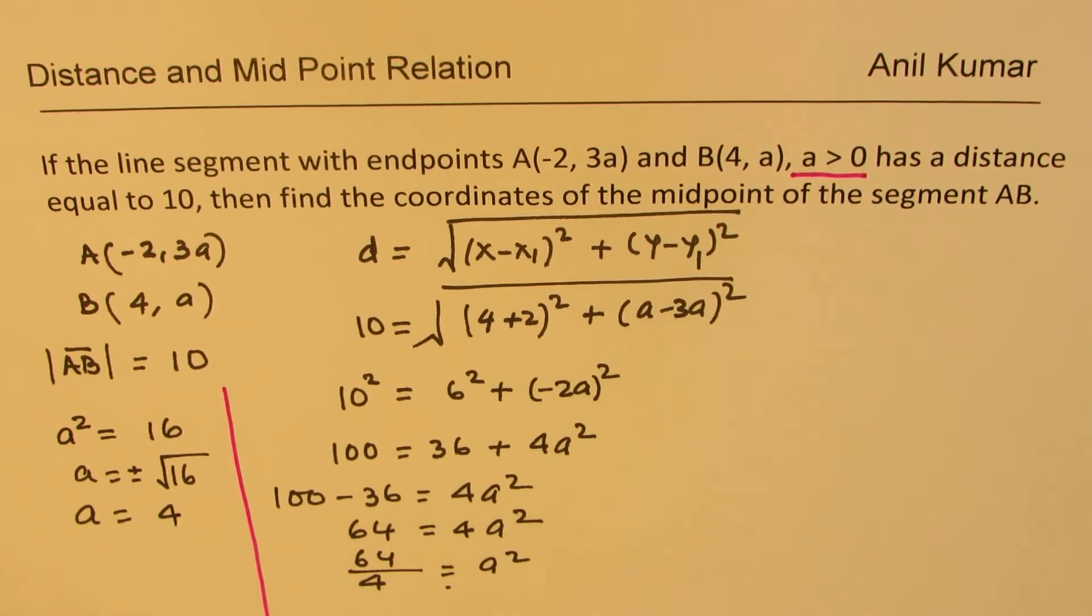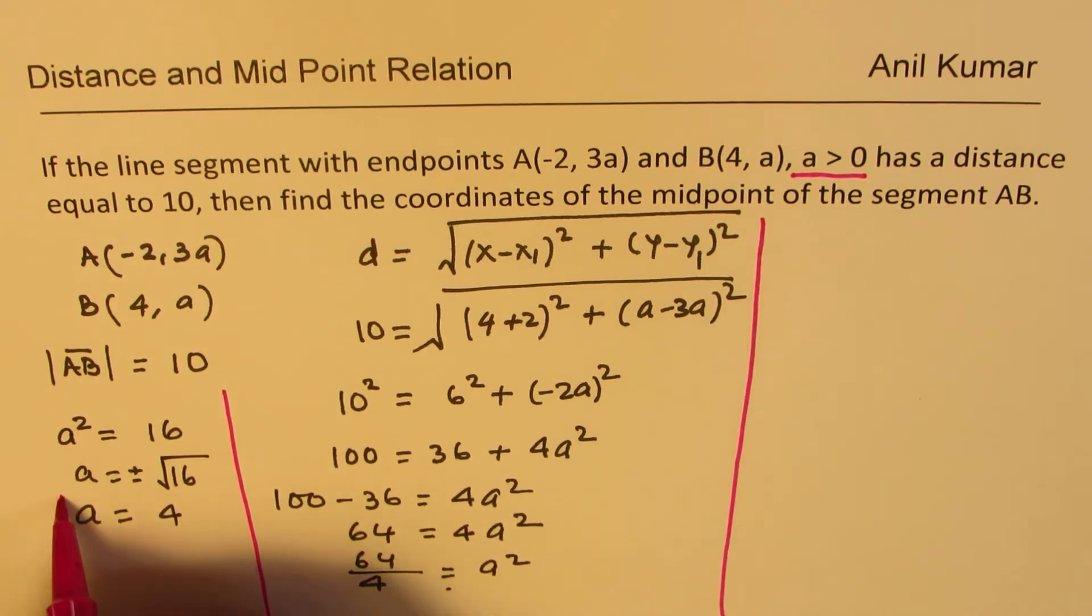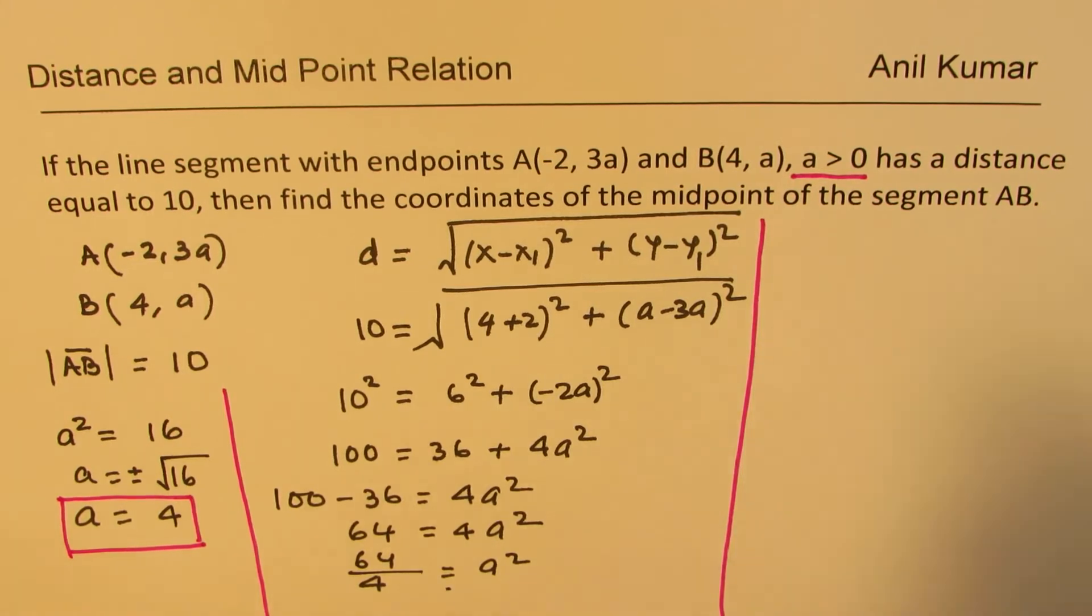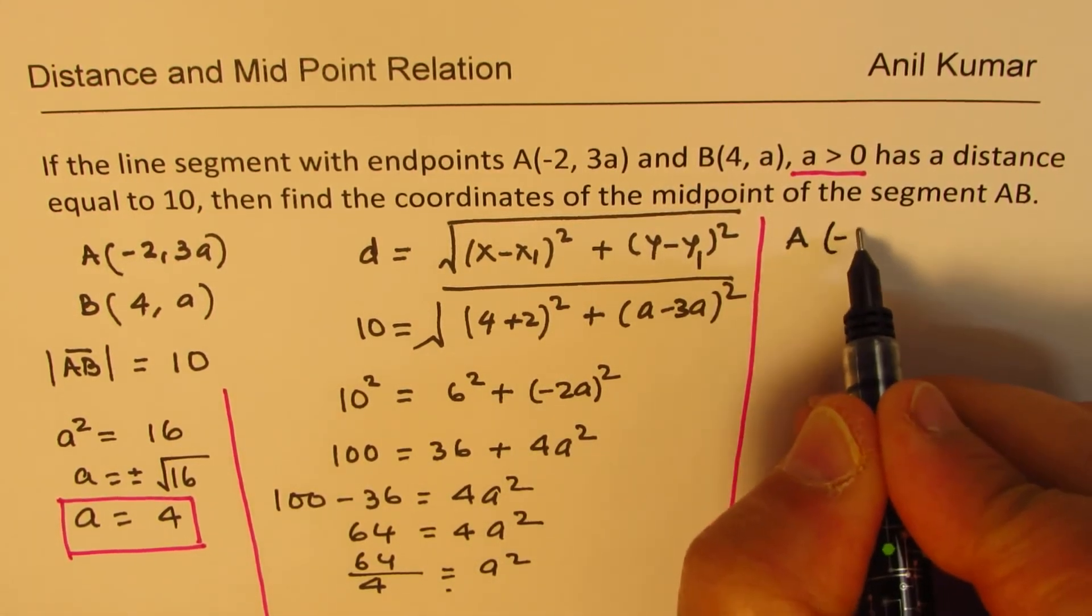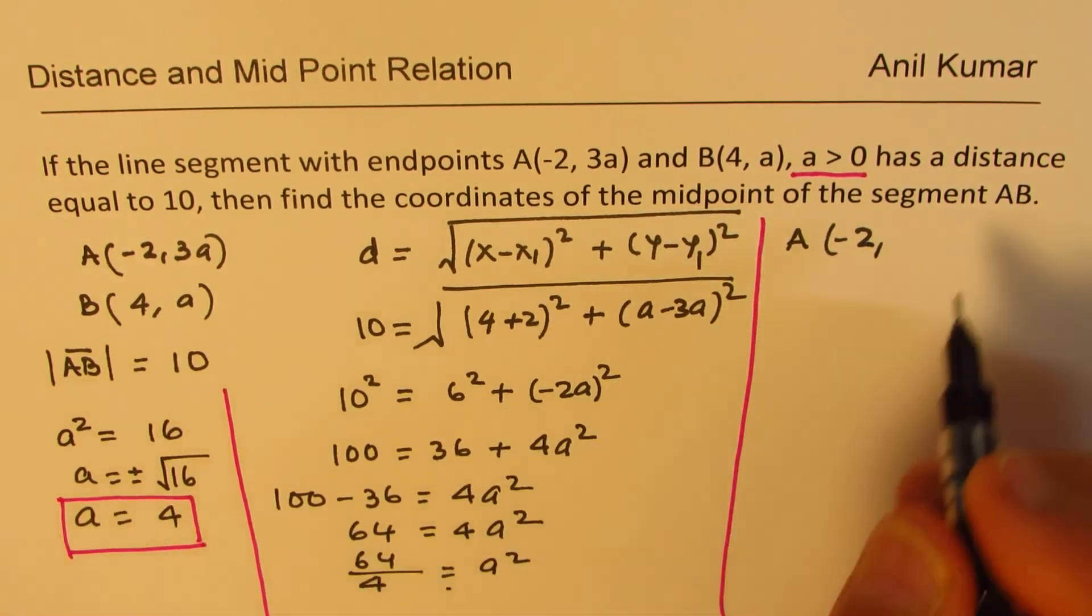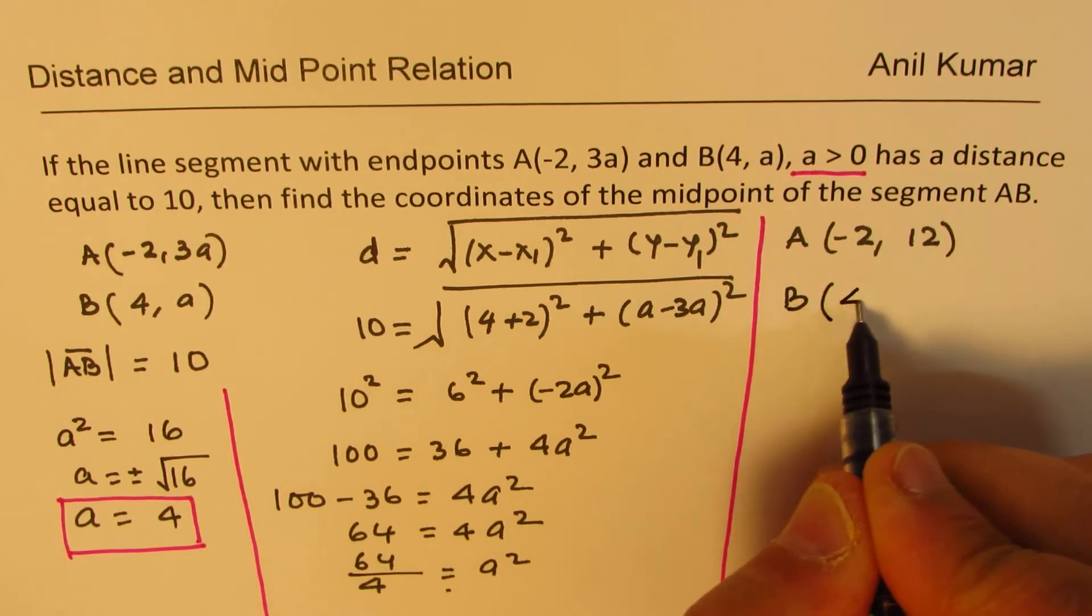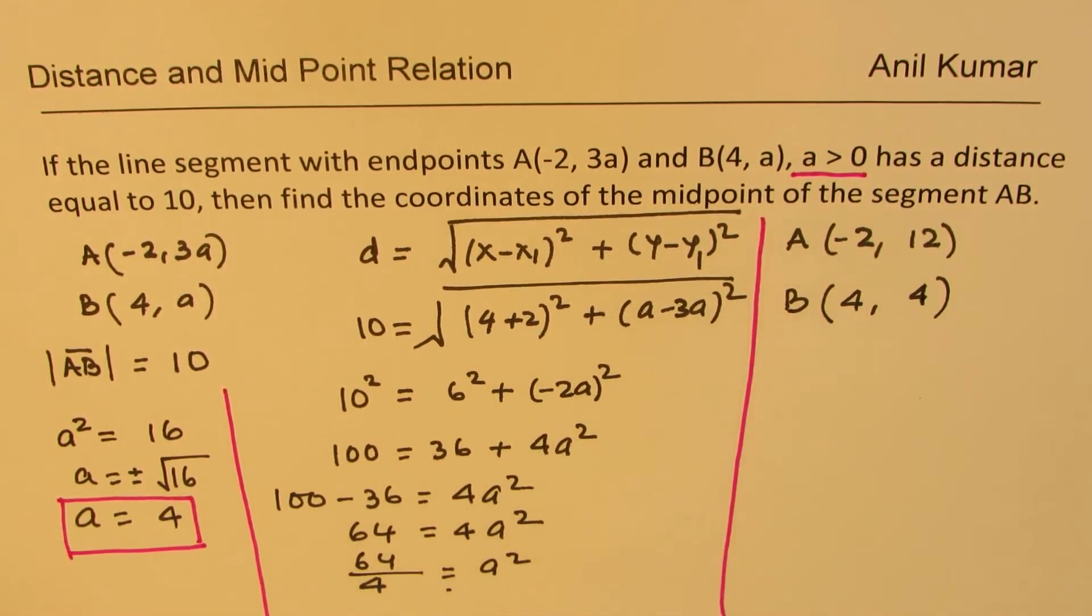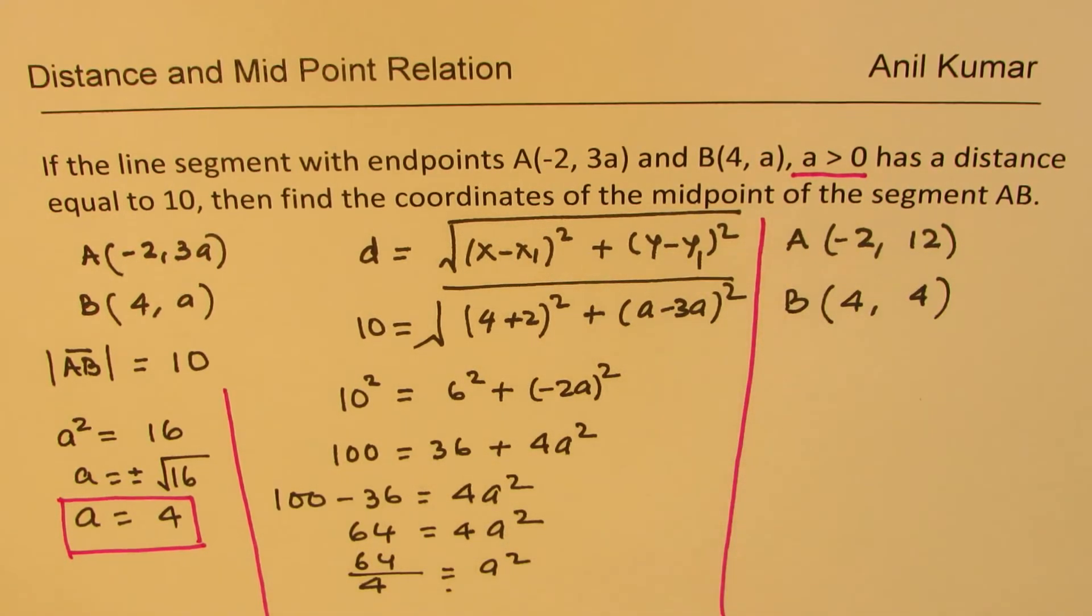Once you know what a is, you know your points. We get a = 4, which gives you the two points. Point A is (-2, 3×4) which is (-2, 12), and B is (4, 4). Now we can find the coordinates of the midpoint of segment AB.